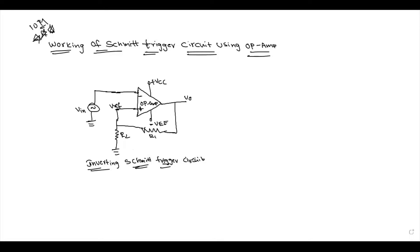In the inverting Schmitt Trigger circuit diagram, the input is in inverting mode, so the output voltage is of opposite polarity. The output is taken at the non-inverting terminal side with opposite polarity.